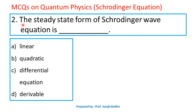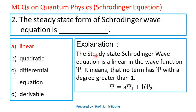Question number 2. The steady state form of Schrödinger's wave equation is — options are linear, quadratic, differential equation, or derivable. The steady state Schrödinger's wave equation is linear in the wave function psi. It means no term has psi with a degree greater than 1. It also means that if two wave functions psi1 and psi2 are solutions, then any linear combination of psi1 and psi2 is also a solution. So the steady state form is linear.